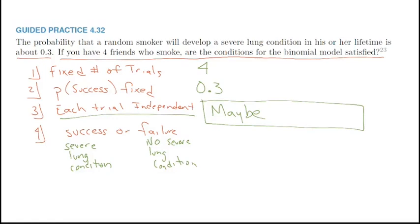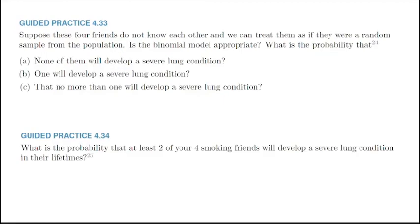There will be times you can definitely tell things are dependent — like in a mosaic chart from test one where Democrats and raising taxes showed a clear association. However, for binomial distributions, independence is often a 'maybe,' so we assume independence and note it. Now suppose these four friends do not know each other — that guarantees independence, and we can treat them as a random sample, making the binomial model appropriate.